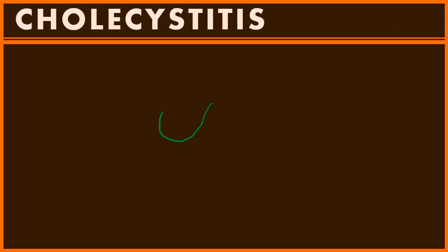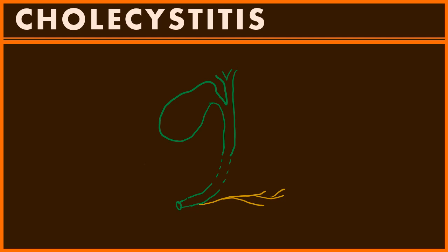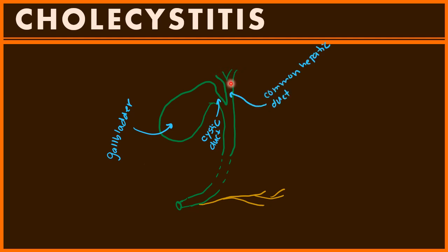We're going to begin our discussion by looking at the biliary tract, including its connection to the pancreatic ducts. This rather large structure, which holds the bile, is known as the gallbladder. It has a stalk known as the cystic duct. Right above is the common hepatic duct, which combines with the cystic duct to form the common bile duct.